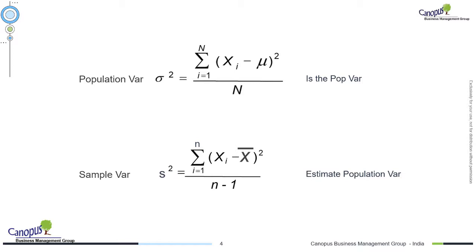So now you understand the difference between the population parameter — say variance — and sample variance. Why do we compute sample variance and how is it different from population variance in terms of the formula? Why do we use N minus 1? There is a clear scientific explanation and an empirical proof for that. I have done a separate video which I've included in the link below, and you can use that to understand why N minus 1 is used.